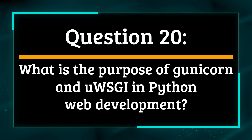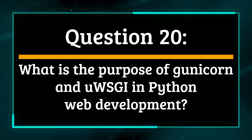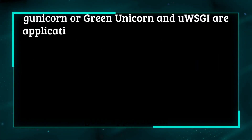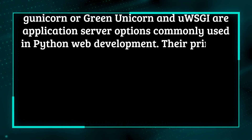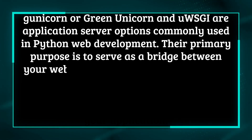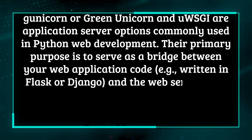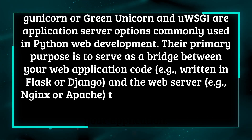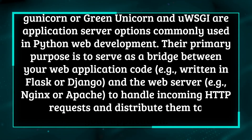Question 20: What is the purpose of Gunicorn and uWSGI in Python web development? Gunicorn (Green Unicorn) and uWSGI are application server options commonly used in Python web development. Their primary purpose is to serve as a bridge between your web application code — written in Flask or Django — and the web server, such as Nginx or Apache, to handle incoming HTTP requests and distribute them to your application.